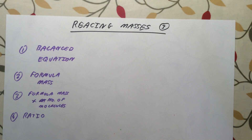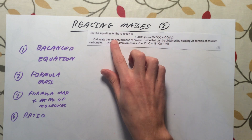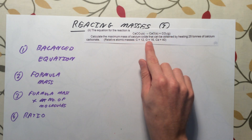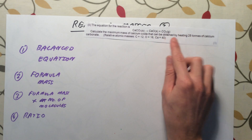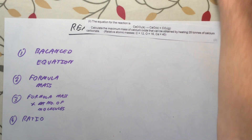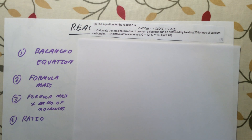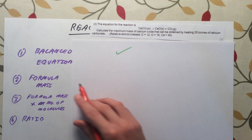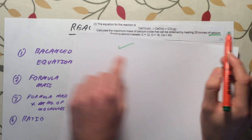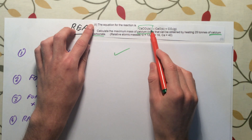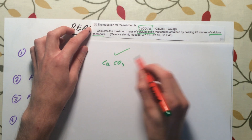The second question follows a similar theme. The equation for the reaction is CaCO₃ → CaO + CO₂. Calculate the maximum mass of calcium oxide that can be obtained by heating 25 tons of calcium carbonate. Again, we are already given the balanced equation. In this case, though, we have not been given the formula masses, so we need to calculate them. We are interested in calcium carbonate and calcium oxide.